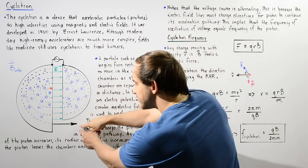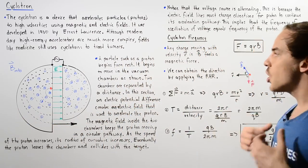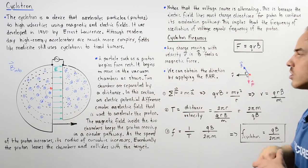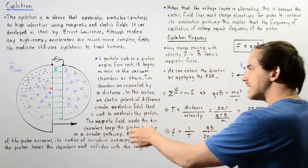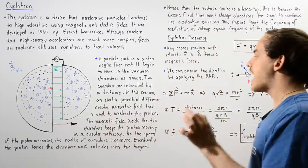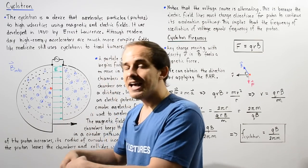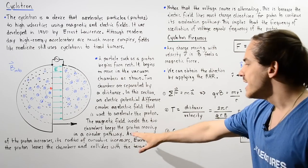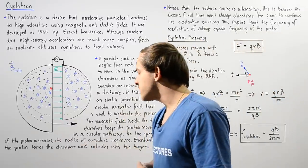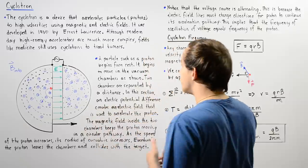When the particle exits, we can place a target object there — for example, a tumor — and the particle will collide with it. To recap: a proton begins from rest, moves through the vacuum chambers, and the two chambers are separated by a gap. In that gap, an electric potential difference creates an electric field that accelerates the proton linearly. The magnetic field inside the chambers keeps the proton moving in a circular pathway without increasing the magnitude of its velocity. As the speed increases, the radius of curvature increases, and eventually the proton leaves the chamber and collides with the target.